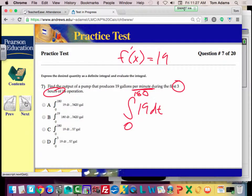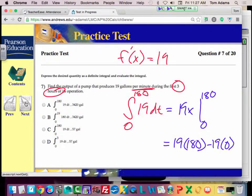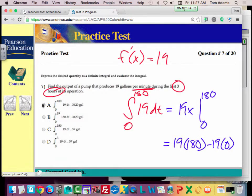And then you've got to evaluate that. So if I take the antiderivative of this, I'm going to get 19x, right? Evaluated from zero to 180, or in other words, 19 times 180 minus 19 times 0. So what's 19 times 180? Yeah, 3420, so it's probably eight.